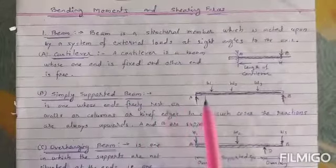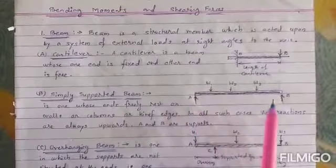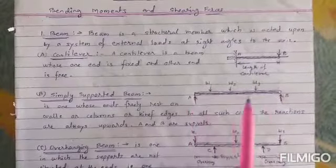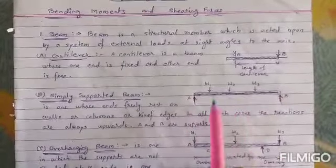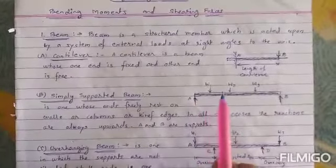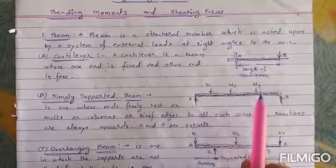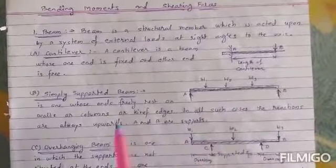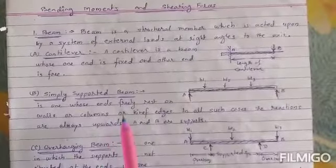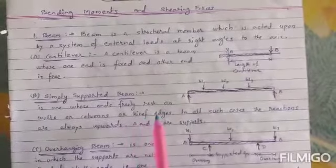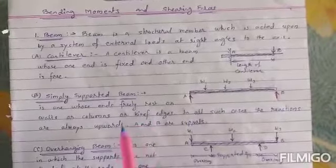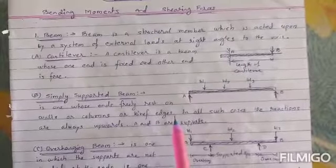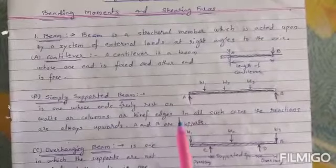The second type is the simply supported beam. Here are end points A and B — they both act as supports. The load is perpendicular — the axis is perpendicular at 90 degrees. A simply supported beam is one whose ends freely rest on a wall, column, or knife edge.